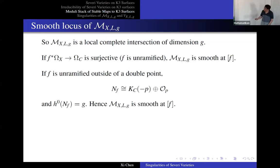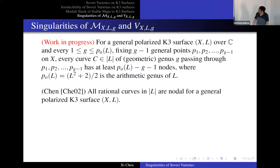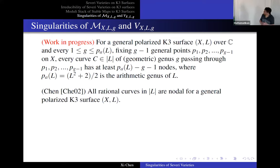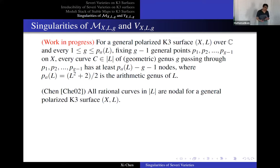This is still a work in progress. We prove that the Severi variety has singularities that are unramified outside a double point. If you have one cusp, the moduli space is smooth. So the moduli space is smooth in codimension one. By the Serre criterion — if a variety is Cohen-Macaulay and smooth in codimension one, it's normal — so M(X,L,g) is a normal local complete intersection.